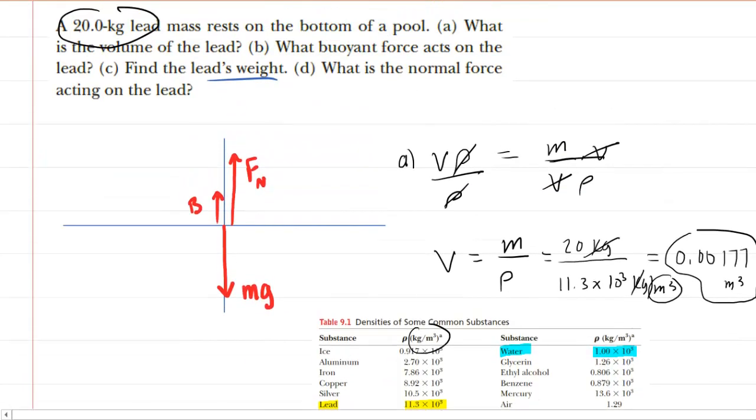Finally, in part D, we need the normal force that is acting on the lead weight. Now we've drawn a free body diagram right here showing three forces acting on this lead mass. We have the downward acting weight, which is also mg. We have the surface of the pool pushing up on the lead weight or the lead mass. That's the normal force. And then we have the buoyant force, which is the upward force produced by the fluid itself.